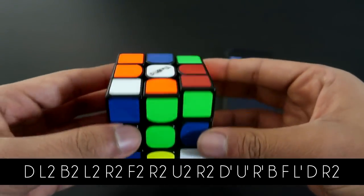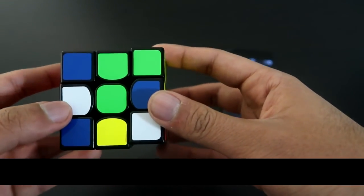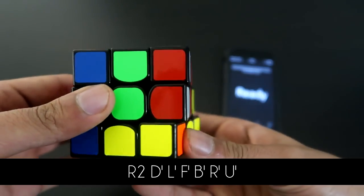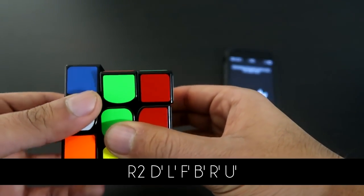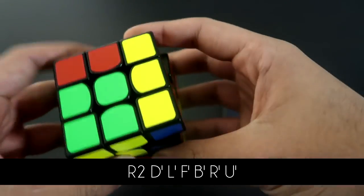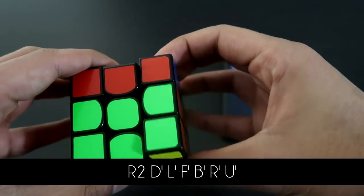Now we're going to memorize this scramble and scramble in front of our friends. Then to solve this scramble, what we have to do is go right, right, down inverted, left inverted, front inverted, back inverted, right inverted, and then finally with an up inverted our cube will be solved.